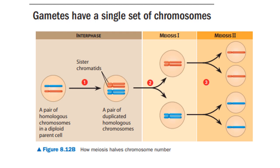In the first division, meiosis I segregates the two chromosomes of each homologous pair, packaging them into separate haploid daughter cells, but each chromosome is still doubled. In the second division, meiosis II separates the sister chromatids. Each of the four daughter cells is haploid and contains only a single chromosome from each homologous pair.